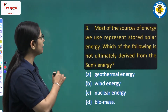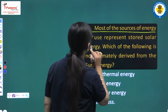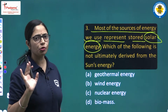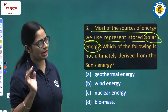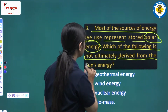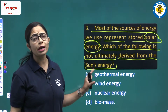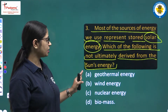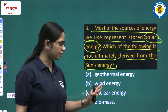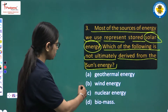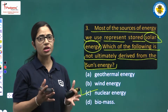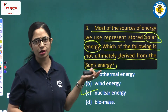Question number 3: Most sources of energy we use represent stored solar energy. Which of the following is not ultimately derived from the sun's energy? Option A: geothermal energy, Option B: wind energy, Option C: nuclear energy, Option D: biomass. The answer is Option C, nuclear energy, because geothermal energy is related to the earth's internal temperature influenced by solar radiation.